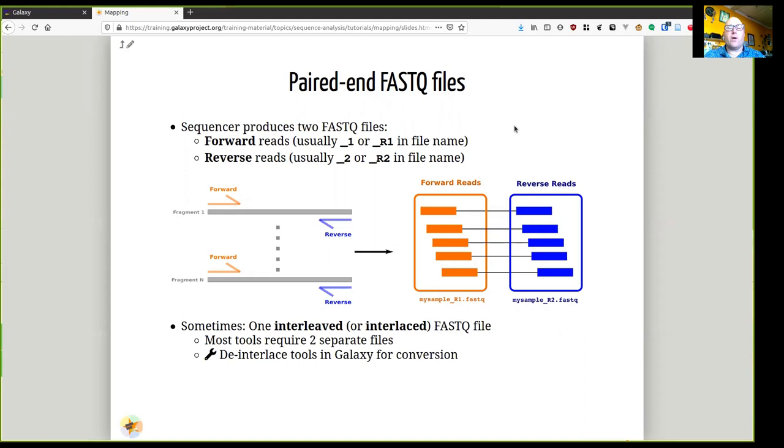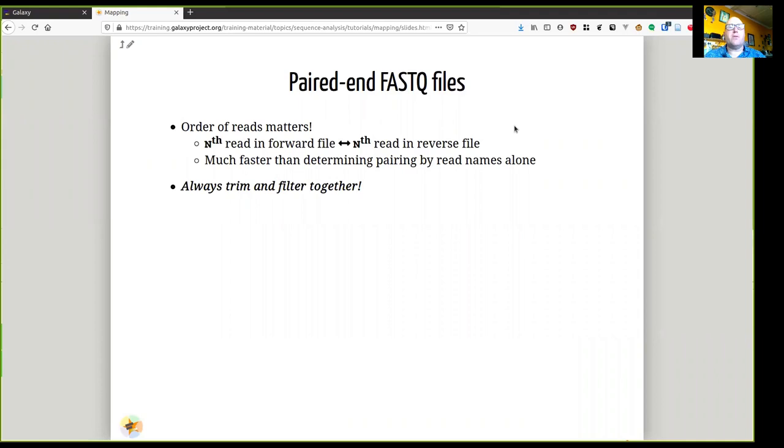Sometimes, however, you do get FASTQ files that contain both forward and reverse reads mixed together in an interlaced format, but because most tools require the forward and reverse files, Galaxy has tools for de-interlacing FASTQ.